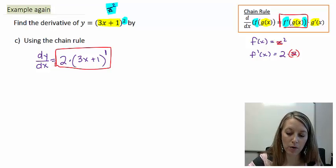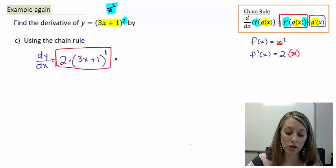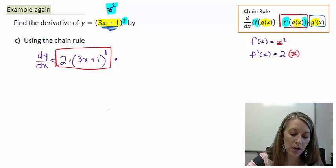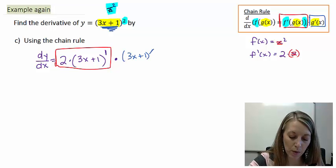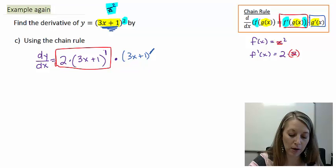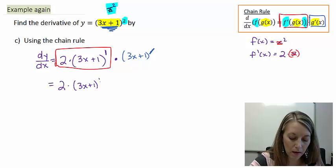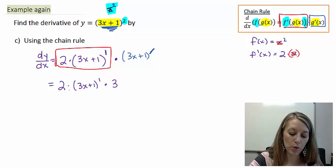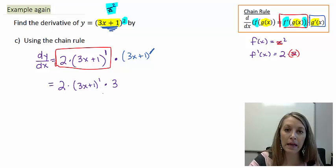That's the first half of the chain rule. Now multiply by the second half — the derivative of my g function, the inside function (3x + 1). The derivative of (3x + 1) gives us 3. So we have: the derivative of the outside function with the inside kept as is, times the derivative of the inside function.